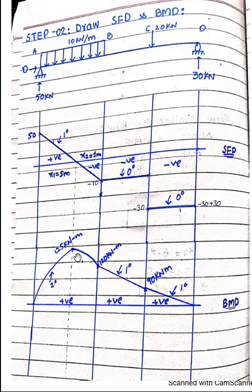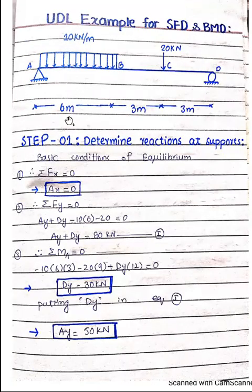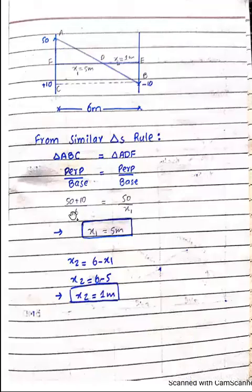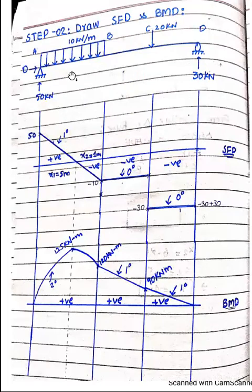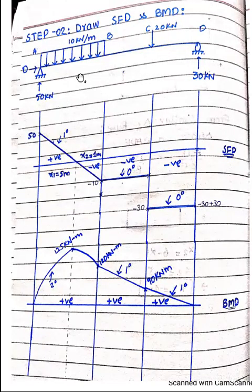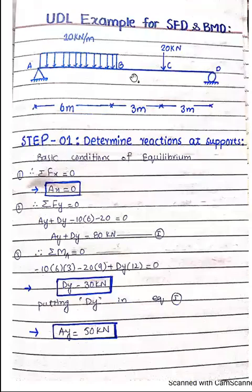So this is the way to draw the shear force and bending moment diagram when a UDL or uniformly distributed load is applied to an indeterminate structure. Any number of UDLs can be applied, but the method for determining shear force and bending moment remains the same for every case. That's all from today's video — thank you very much.